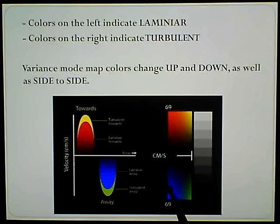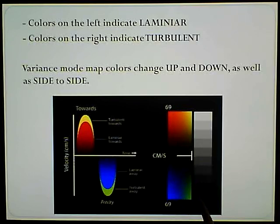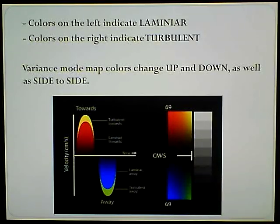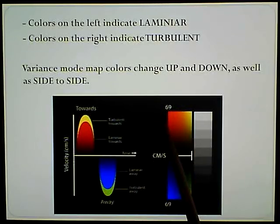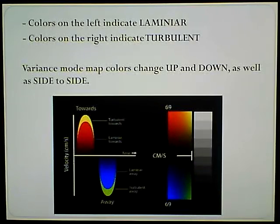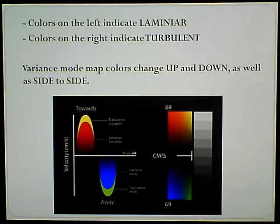From left to right - the colors on the left indicate laminar. See how smooth and even this red is? And the colors on the right are turbulent - it turns into kind of that greenish-yellow type color. Same thing down here: nice even blue, see how they change from left to right to that green - laminar to turbulent. You still have towards and away, but also that left and right laminar to turbulent. The variance mode map colors change up and down as well as side-to-side.